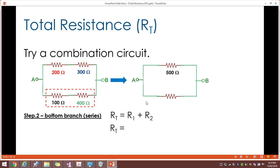Now let's consider the bottom branch. 100 plus 400, that gives us an effective branch resistance of 500 ohms. Now as you can see that more complicated looking circuit on the left is replaced by two parallel branches each of 500.